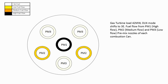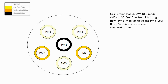When 7FA gas turbine load reaches 42 megawatt, DLN mode shifts from mode 3 to mode 3E. Fuel flows from PM1, PM2, and PM3 of each combustion can. Note that fuel flow is high from PM1, medium fuel flow from PM2, while from PM3 fuel flow is low.